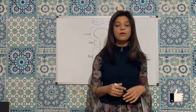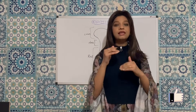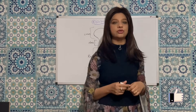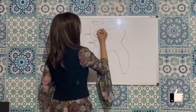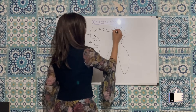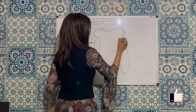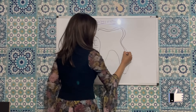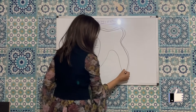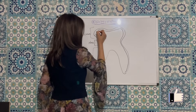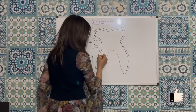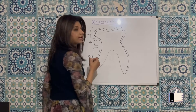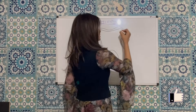However, internally, the tooth is composed of several layers of tissues. The hardest outer white layer is called enamel. Enamel is non-living and is mainly composed of calcium phosphate.